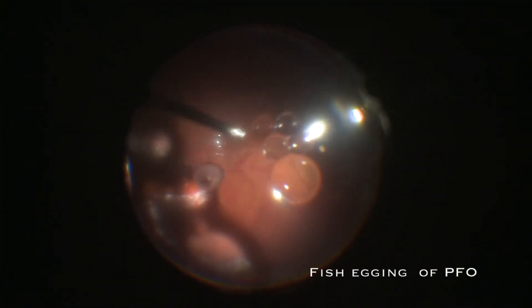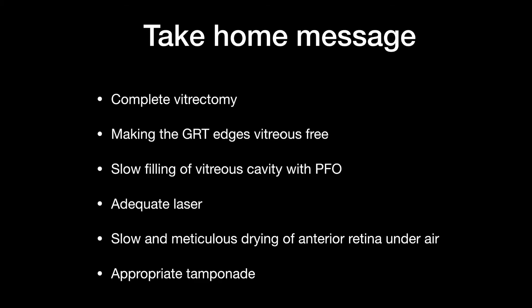Fish-egging due to turbulence of non-valved trocar is another undesired event which can lead to postoperative submacular PFCL bubbles. Low infusion pressure and using a valved cannula can circumvent this problem. So to conclude, the take-home points in the management of GRT are: complete vitrectomy, make the GRT edges vitreous-free, slow filling of vitreous cavity with PFCL, adequate laser, slow and meticulous drying of anterior retina under air, and finally choosing the appropriate tamponade.